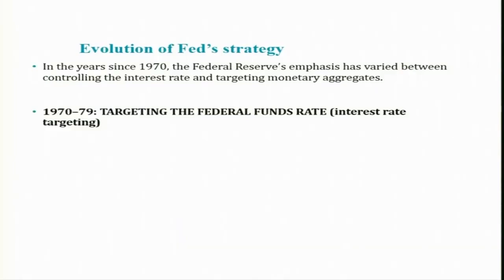In the previous session we discussed that there are mainly two intermediate targets in the strategy of monetary policy: one is targeting monetary aggregates and the other one is interest rate targeting. In this session, let us see the evolution of Fed Strategy over time. Since 1970, the Federal Reserve's emphasis has varied between controlling the interest rate and targeting monetary aggregates, meaning they have been interchangeably using either strategy.